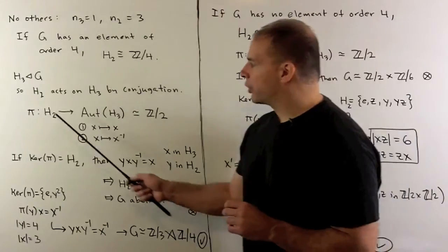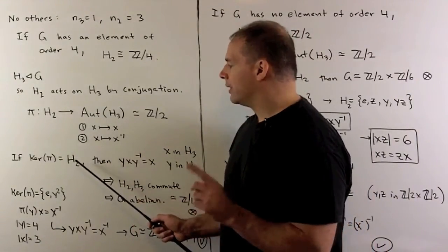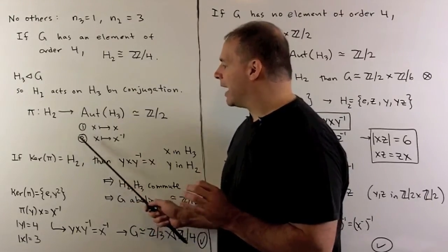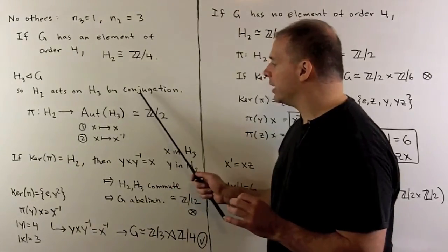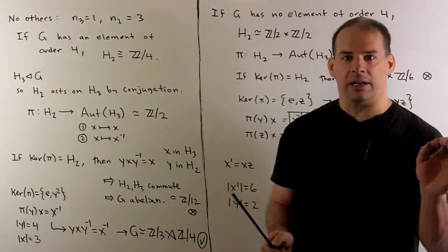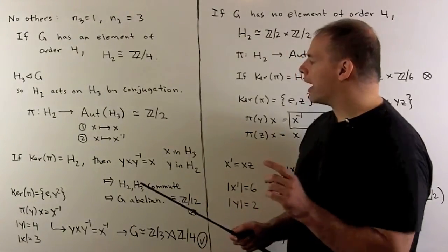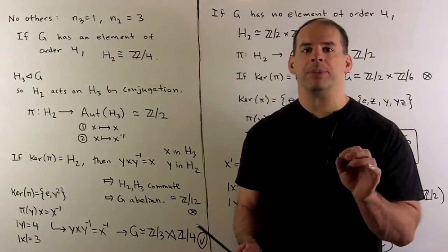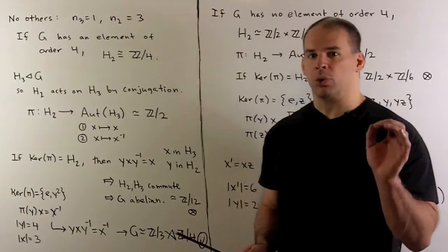Now, if the kernel of this homomorphism is all of our Sylow 2, then what does that say? That says when I conjugate by any element in the Sylow 2 on any element in the Sylow 3, we just act by the identity map. So yxy inverse equals x, or every element in our Sylow 3 commutes with every element in our Sylow 2. That means our group's abelian. It must be isomorphic to Z mod 12.